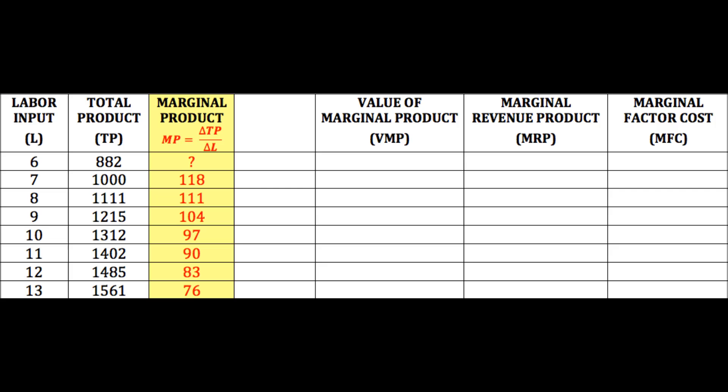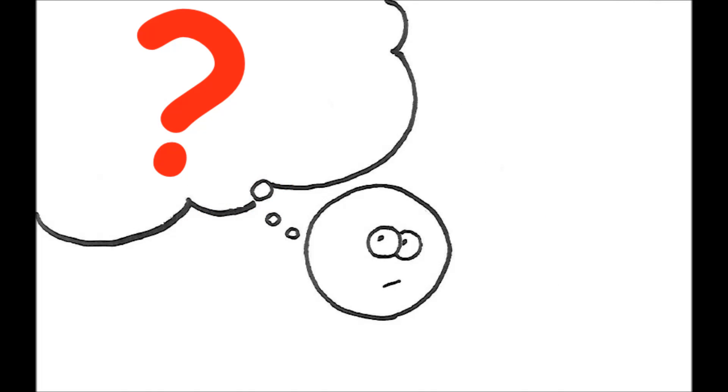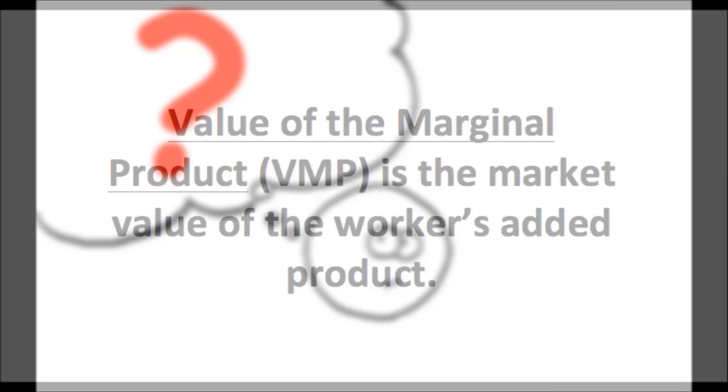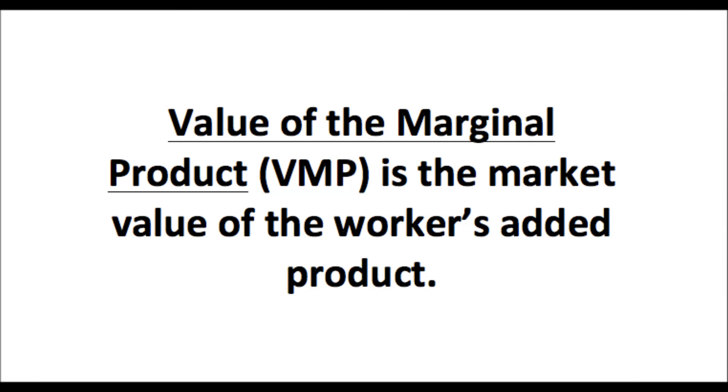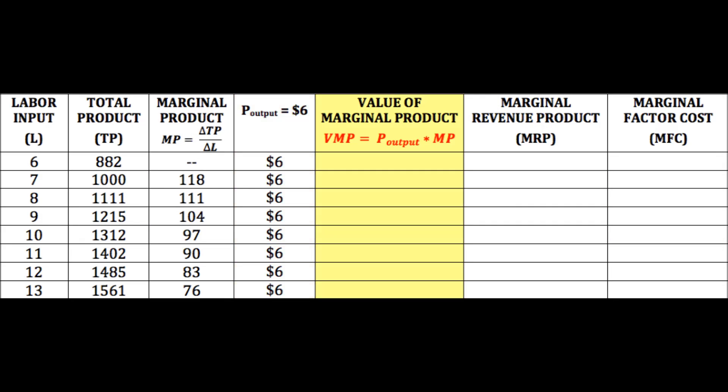Based on what we have so far—workers, total product, and marginal product—I still need some more information, specifically the marginal cost of hiring the last worker and the marginal revenue generated by that worker. How do I determine how much revenue is generated by hiring another worker? I can start by looking at the value of the marginal product, or the VMP, or the market value of the worker's marginal product: the price of the output times the extra output generated by that worker.